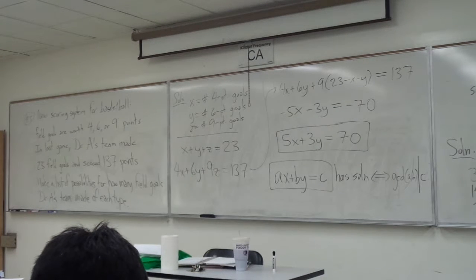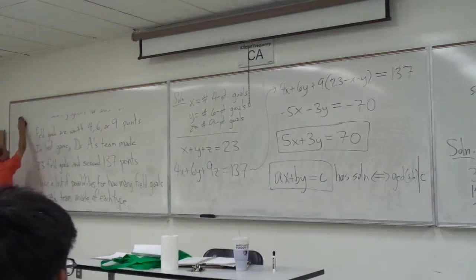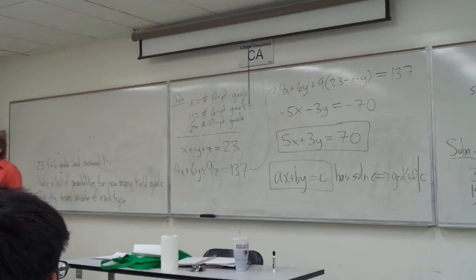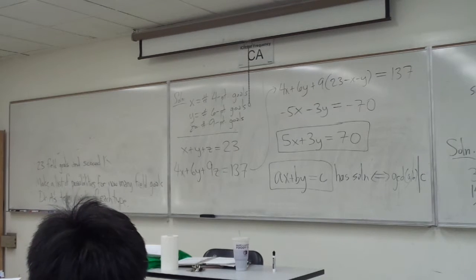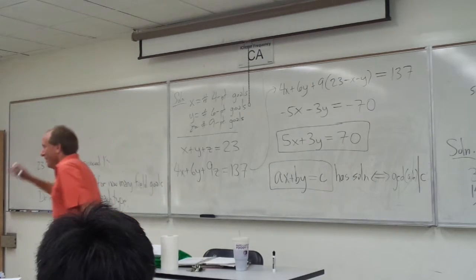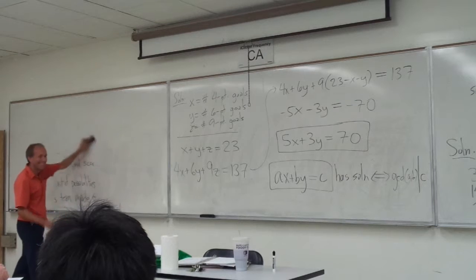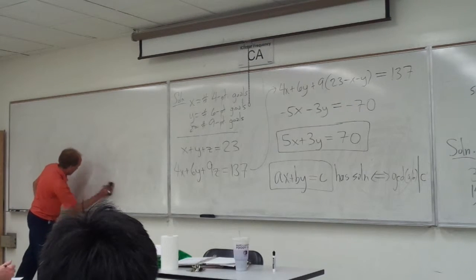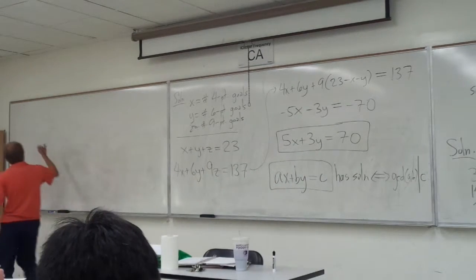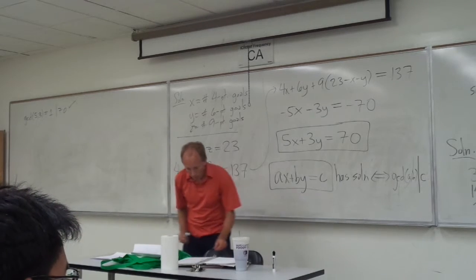So in this case, the GCD of 5 and 3 is 1, definitely divides 70, so we're okay. So we know that we're going to get solutions to this, okay? In fact, how many solutions are we going to get? Actually, you get infinitely many solutions in this context, because what happens is, there's that parameter t, that you find one solution, and then all of the other solutions are parametrized from the one that you've already found.